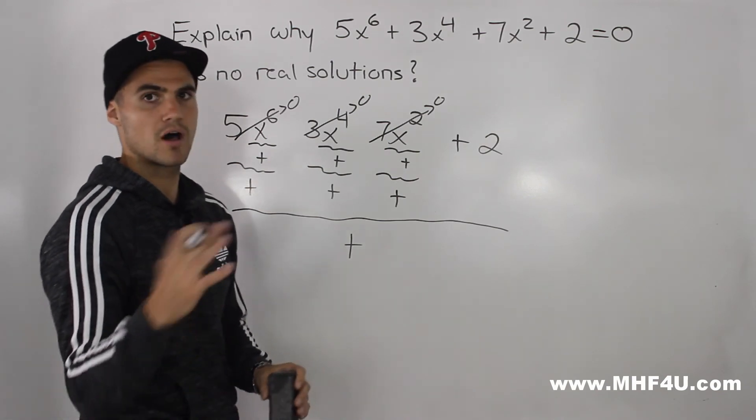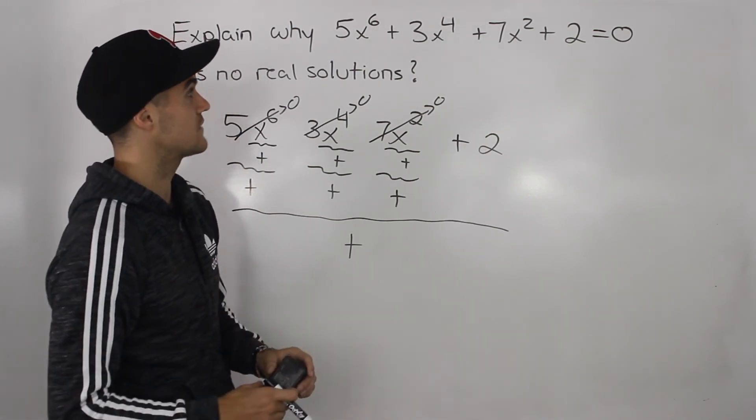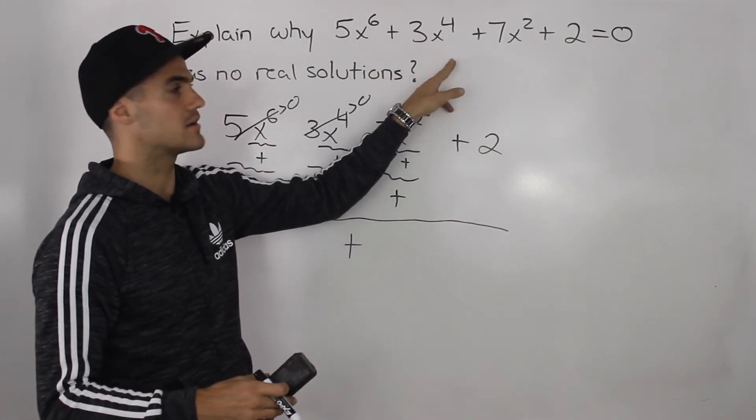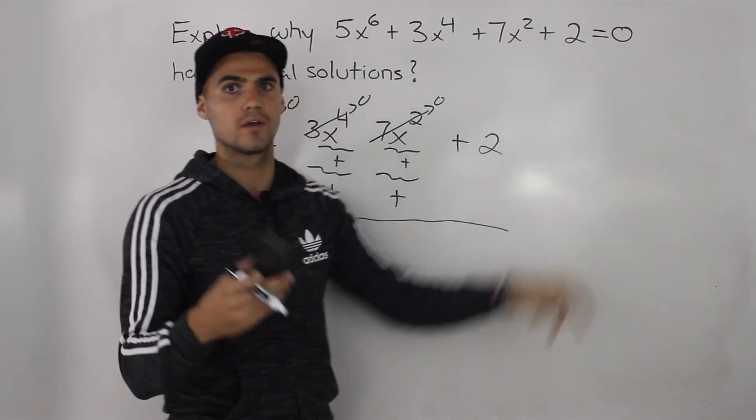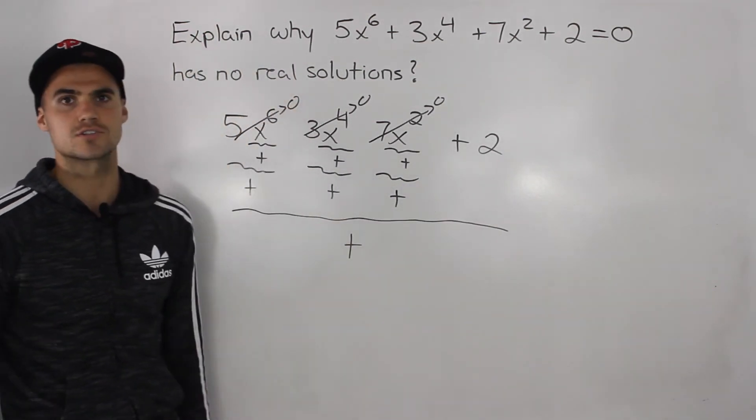So whether we plug in positive values for x, negative values for x, or an x value of zero, this left side is always going to be positive. And a positive number can never equal zero. Hence why this polynomial equation has no real solutions.